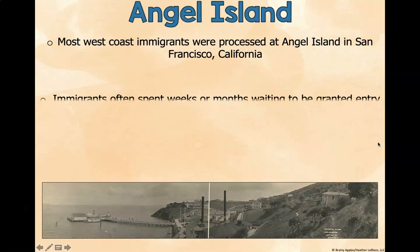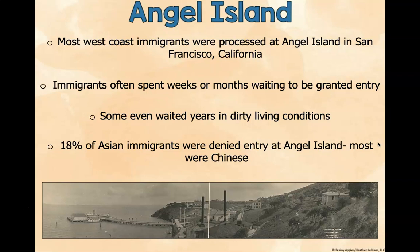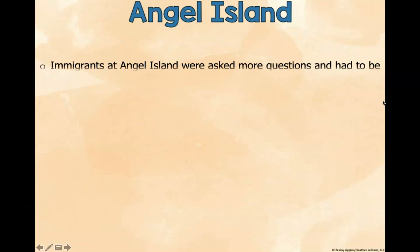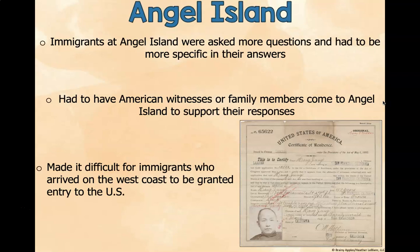Angel Island was the immigration port in San Francisco, California, as opposed to Ellis Island in New York. Immigrants often spent weeks or months waiting to be granted entry — some even waited years in dirty living conditions. 18% of Asian immigrants were denied entry at Angel Island, and most of them were Chinese. Immigrants at Angel Island were asked more questions and had to be more specific in their answers. They also had to have American witnesses or family members come to support their responses, making it very difficult to be granted entry.